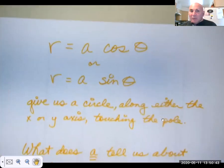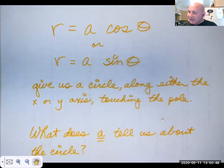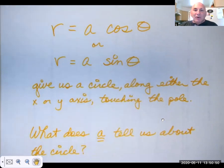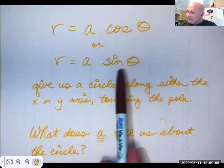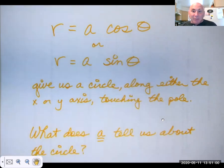So what we've learned in this video is that r equals a cosine theta or r equals a sine theta. In polar equations, that's going to give us a circle. This one's going to be along the x axis. This one's going to be along the y axis. This is touching the pole because r, if r is going to equal zero, then that's going to be touching the pole.